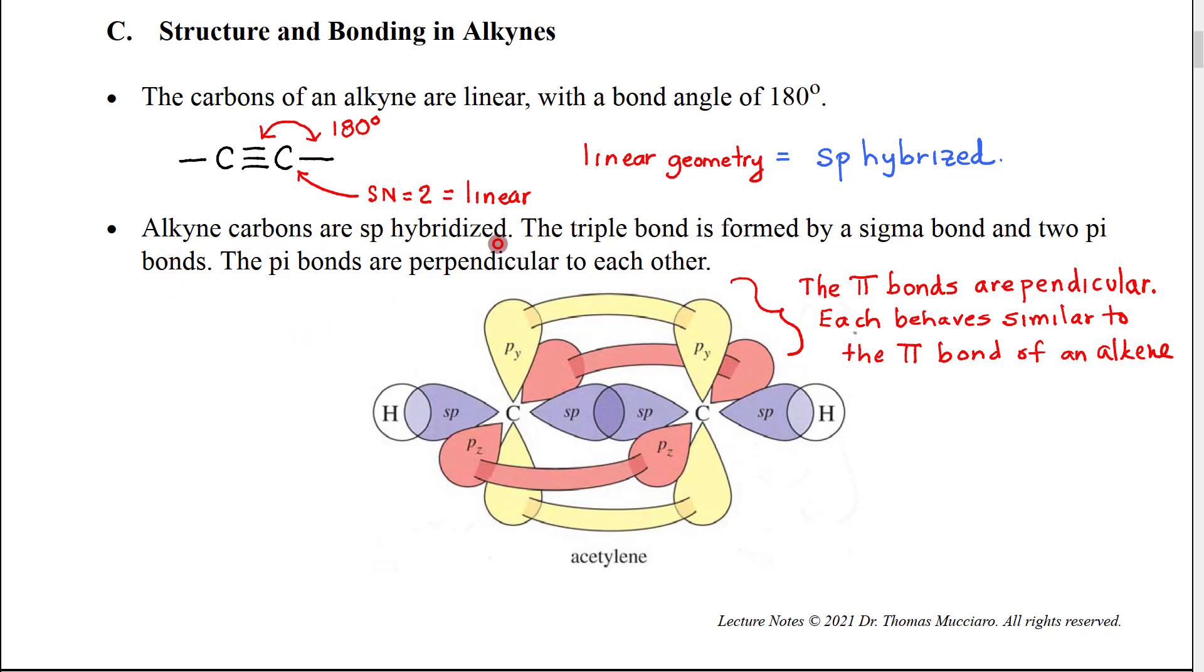So we can see that here. The alkyne carbons are sp hybridized, and the triple bond then is formed by an sp to sp single bond, and then two pi bonds.